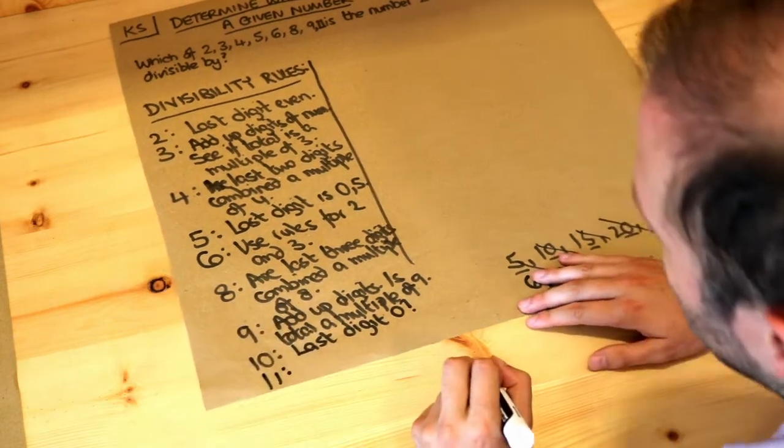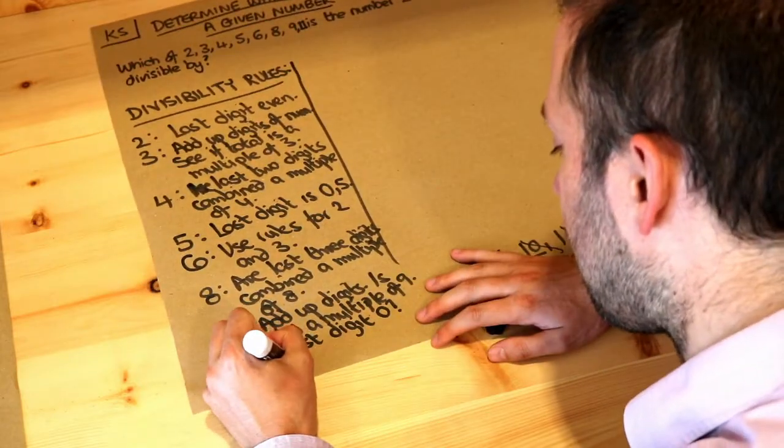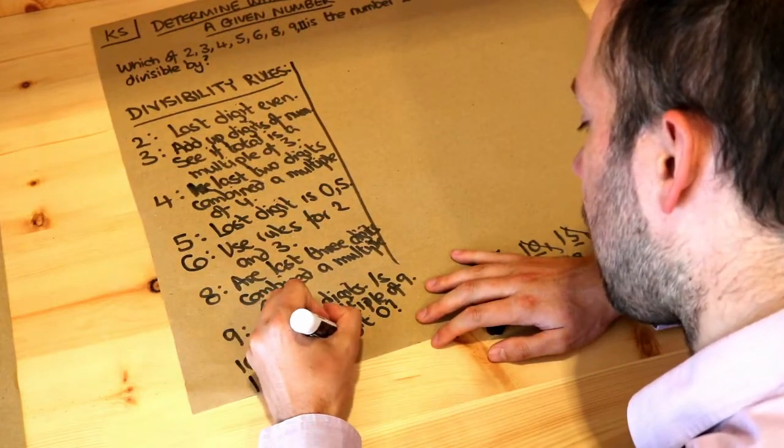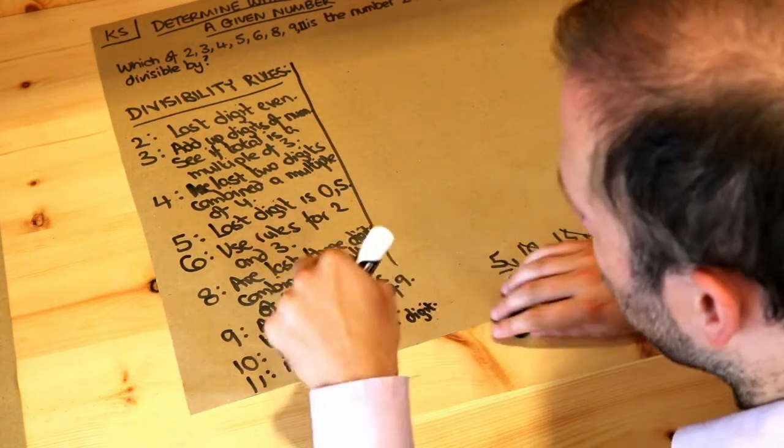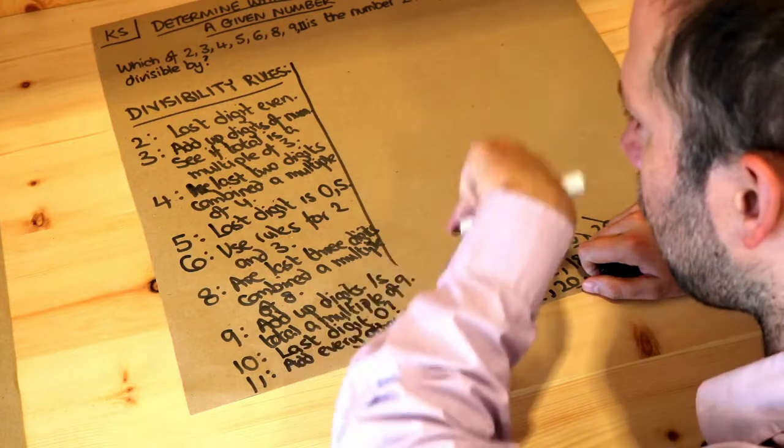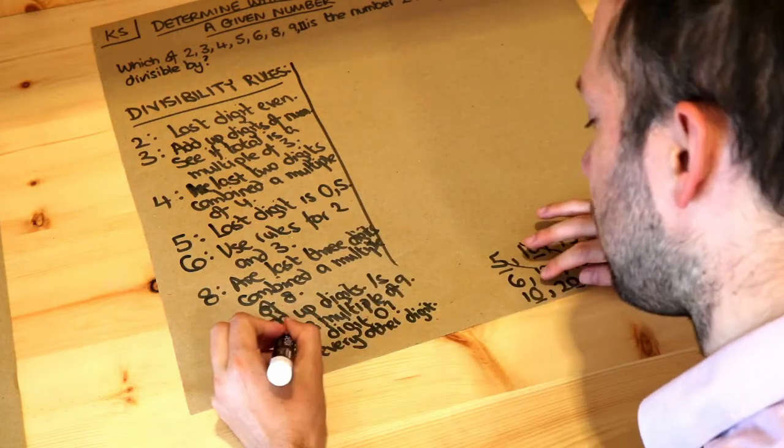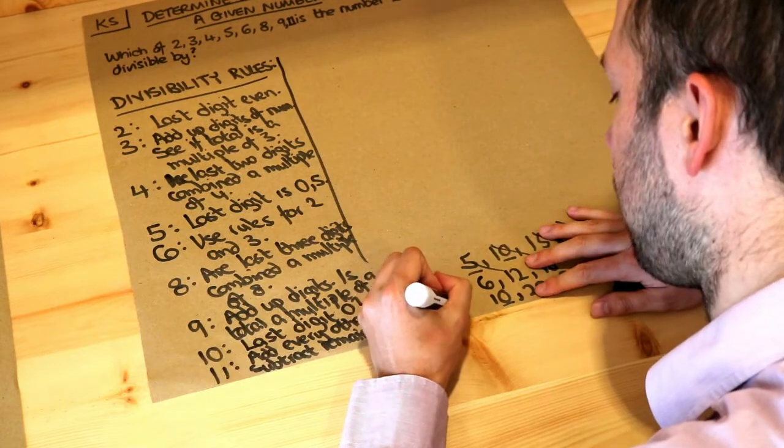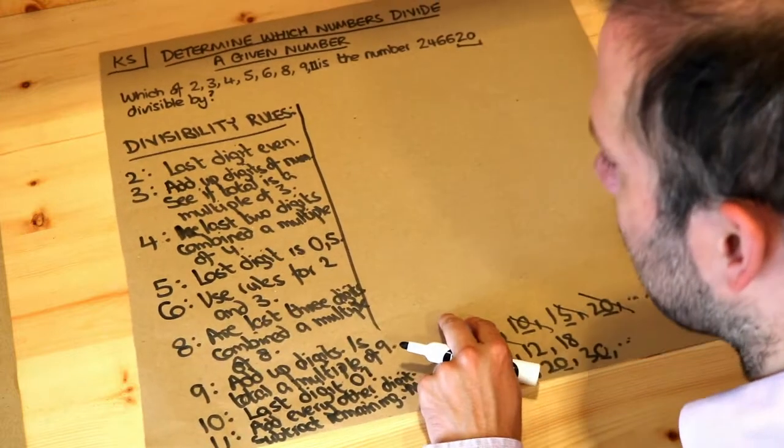And then finally the 11 one is quite complicated and it will become clearer once we use it on this example. But what you do is you add every other digit. So what I mean is that you add the first digit, you skip one, third digit, skip one, fifth digit, add all those up and then subtract the remaining digits. And then we see whether that result is a multiple of 11. And that seems complicated but when we do an example it might be a bit clearer.